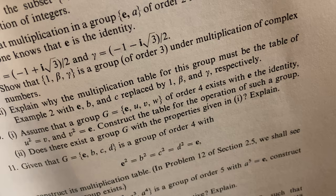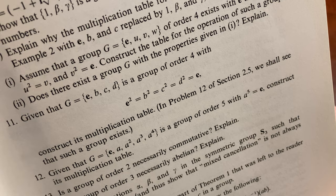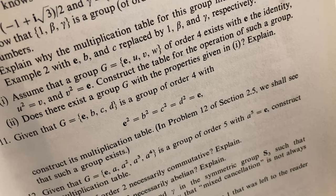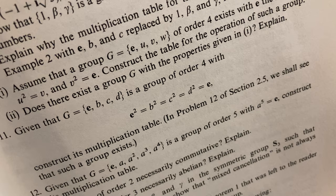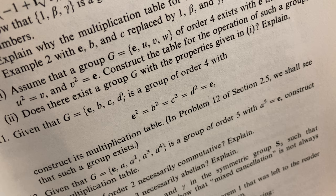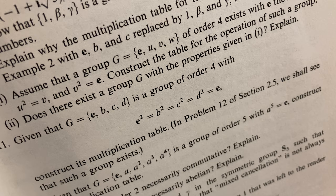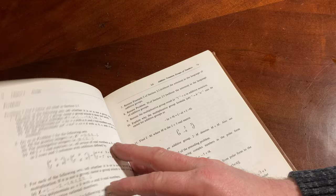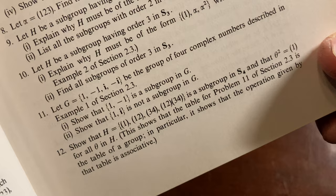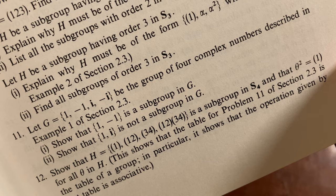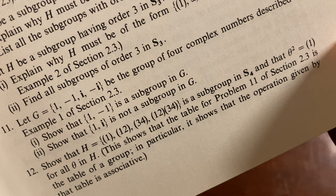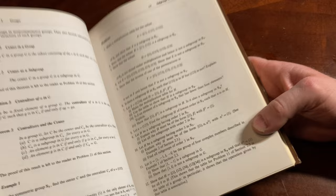The order four, construct its multiplication table. Oh that's a special group. That's a very special group. That group says in problem 12 of section 2.5, we shall see that such a group exists. Yeah we should go there now. This is the Klein 4 group. Okay, so problem 12 of section 2.5. Let's look at that, problem 12 of section 2.5. Let's see what that is. So we have this group here. Its elements are, it's a subgroup of S_4, the permutations. Right. Cool. Very very cool. So yeah, interesting book.